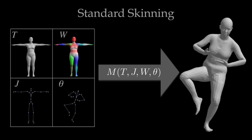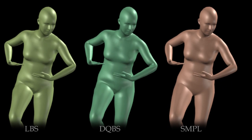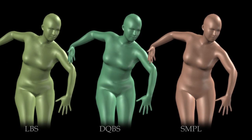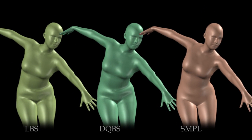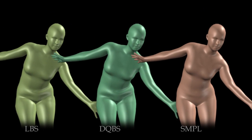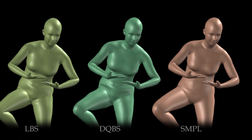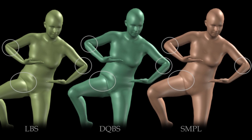Standard skinning functions M include linear blend skinning, denoted by LBS, and dual quaternion blend skinning, denoted by DQBS. Both have well-known artifacts, highlighted here.